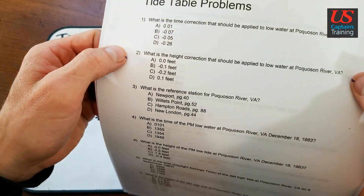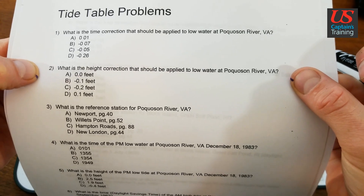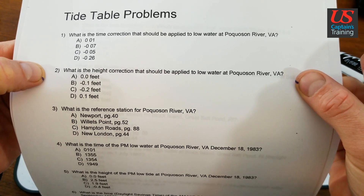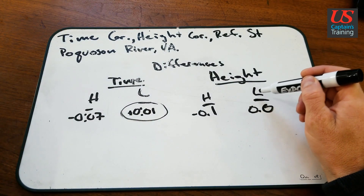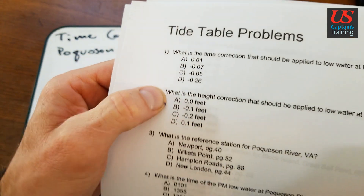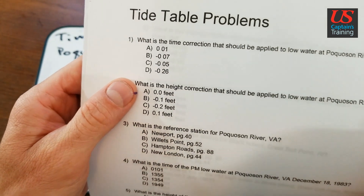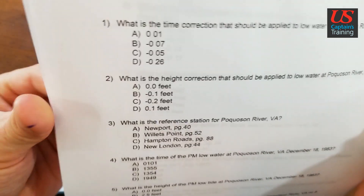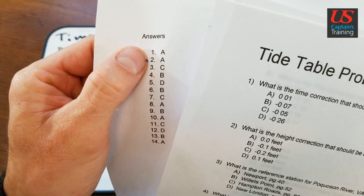Problem 2: what is the height correction that should be applied to low water? We have height, low water: 0.0. There's the answer right there. It's A, 0.0. Check it out on the answers — 2 is A.